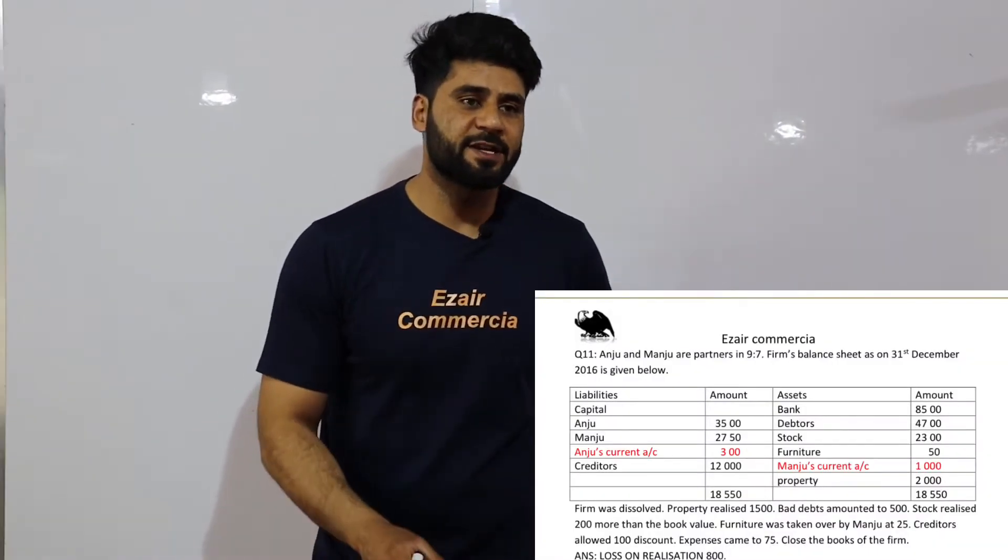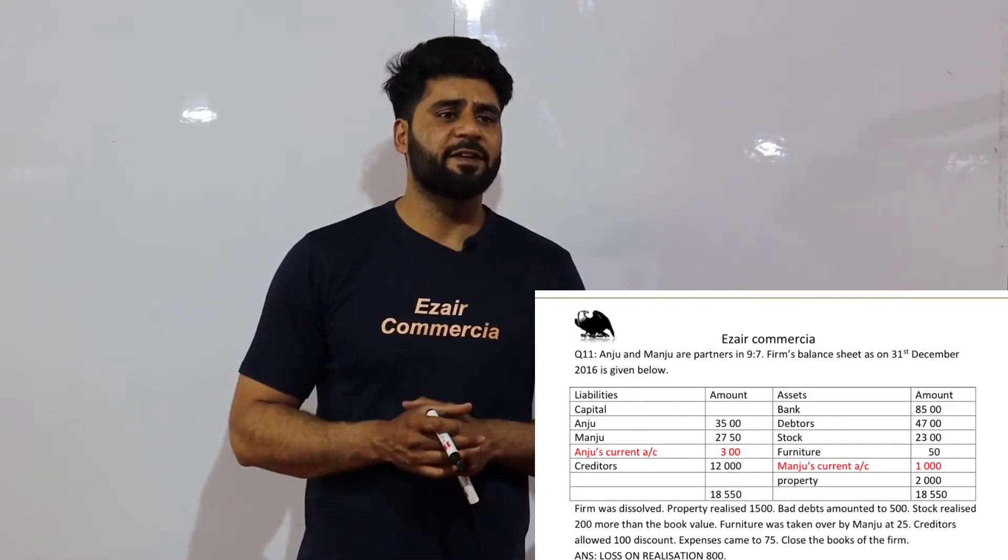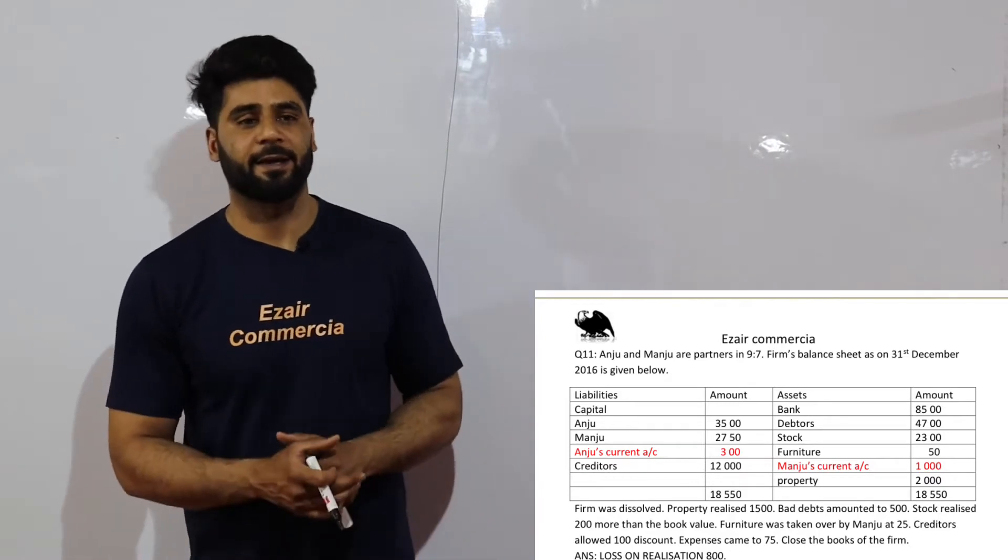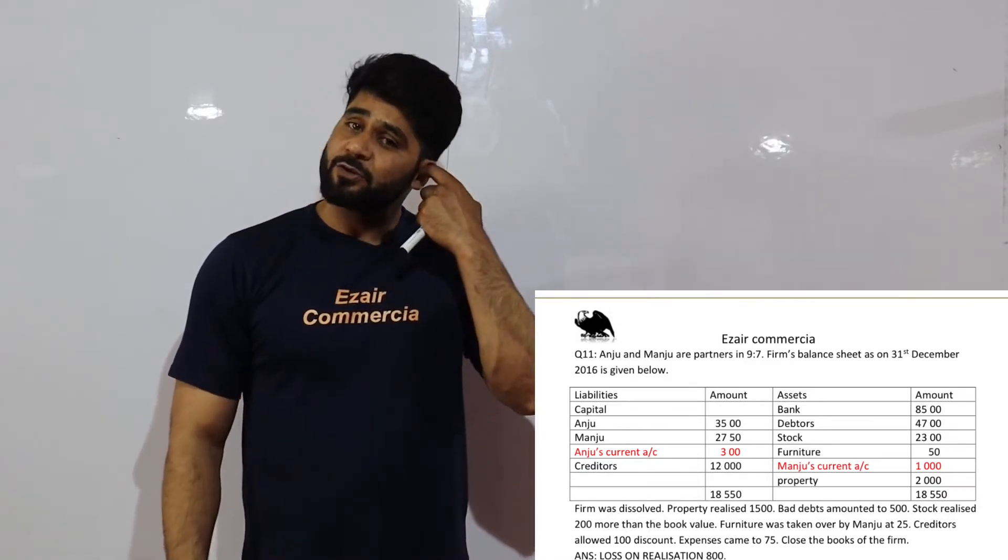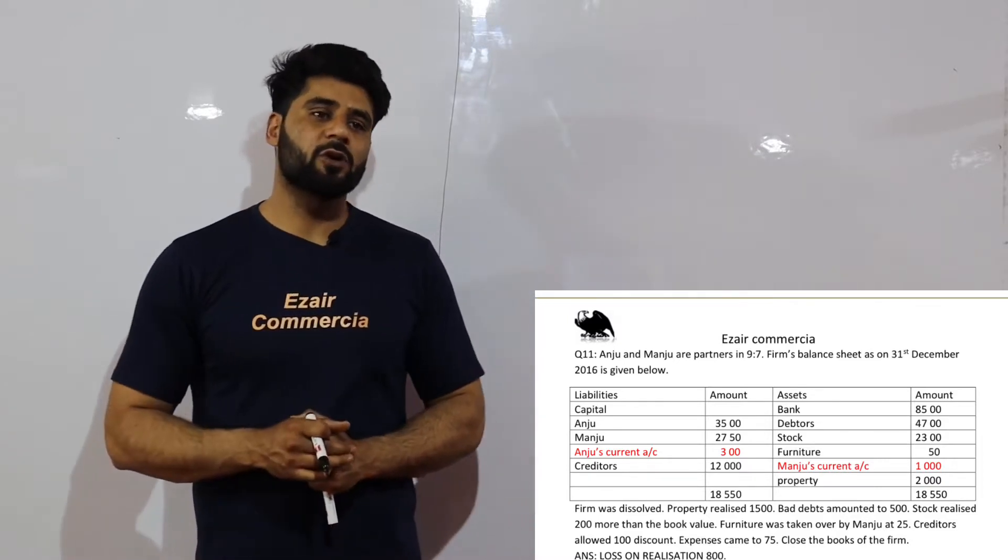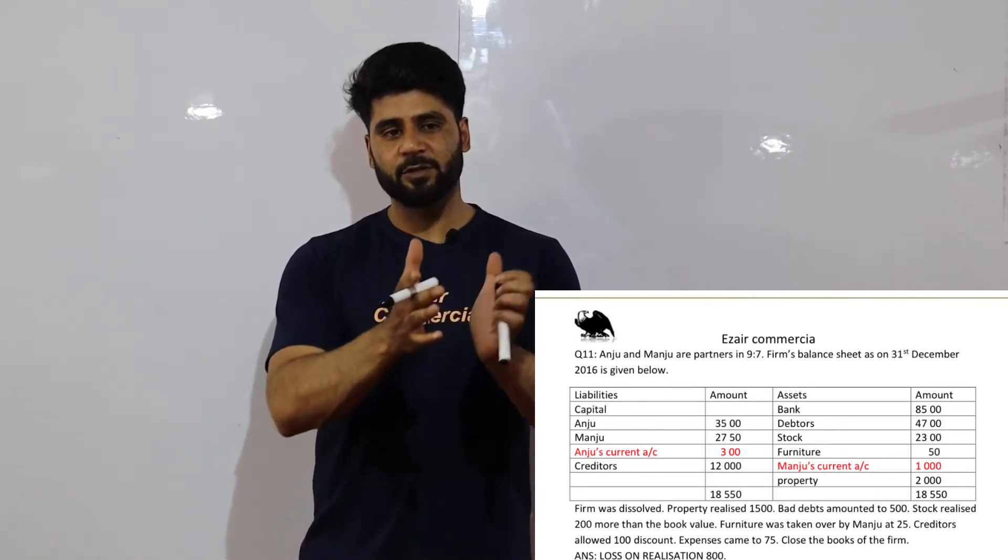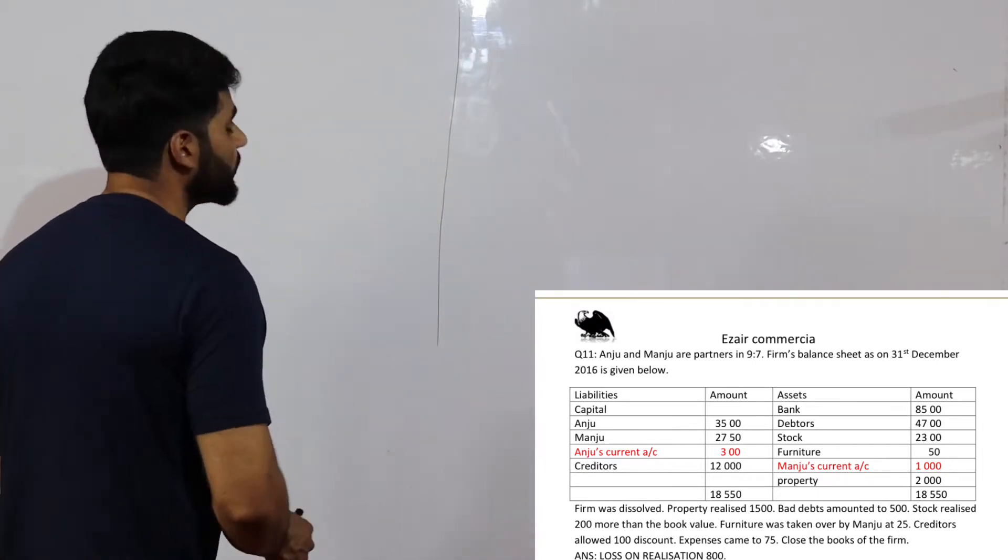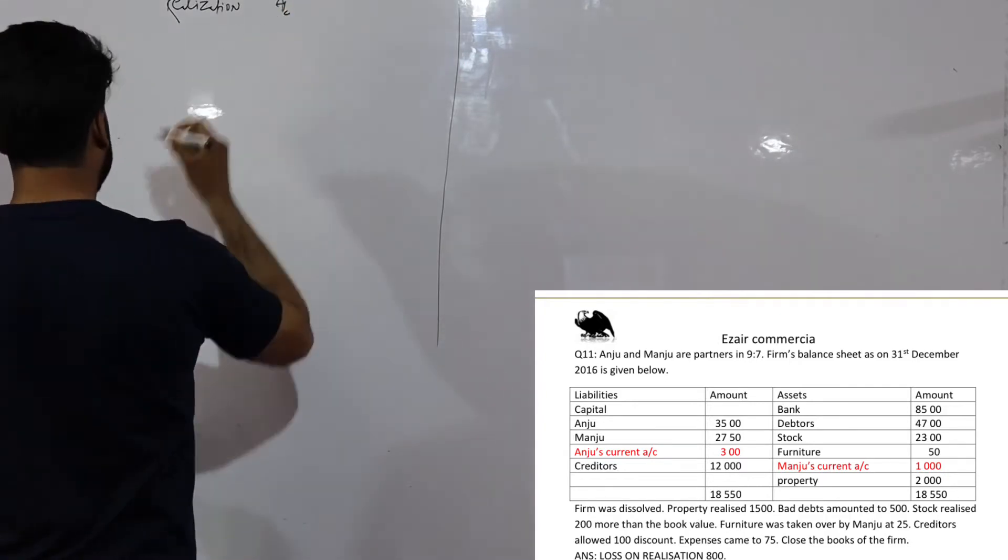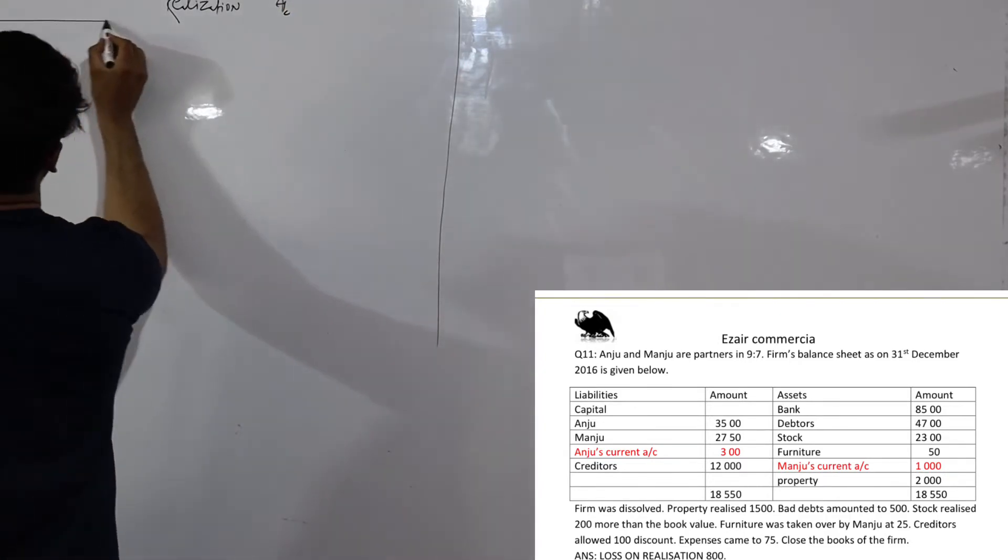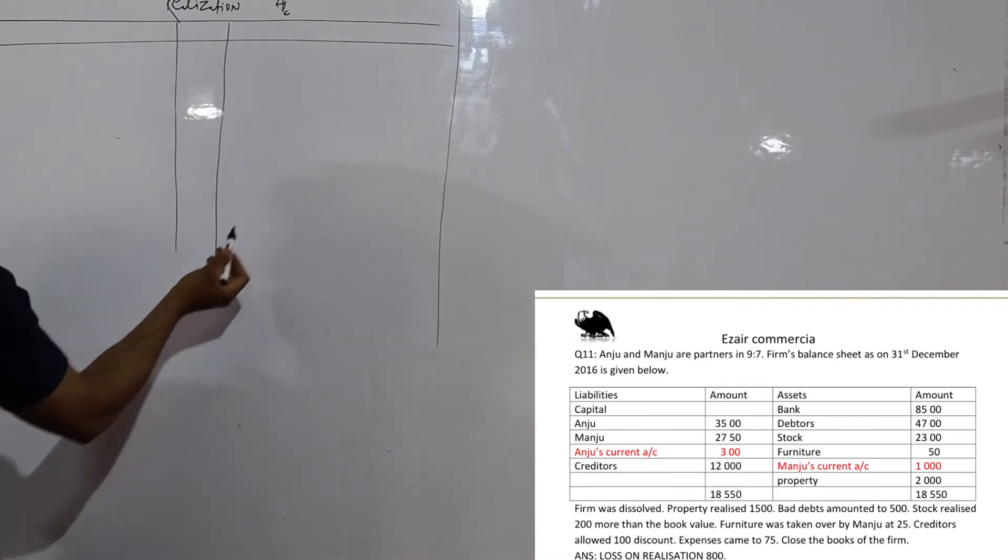Onju and Monju are partners in a nine to seven firm. The balance sheet on 31st December 2016 is given below. Capital is given - Onju 3500 and Monju 2750. There is a current account. This current account takes the debit side, you have to take credit side. Capital account, creditors is liability, bank is cash and bank which is asset. Debtors is asset, stock is asset, furniture is asset, and also there is current account. Current account is on credit side, so property is asset. After this, the question says we have to prepare realization account. I hope you remember.